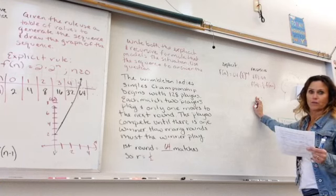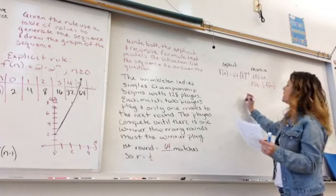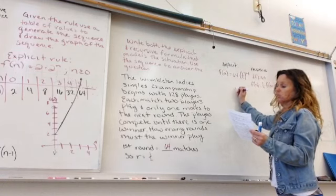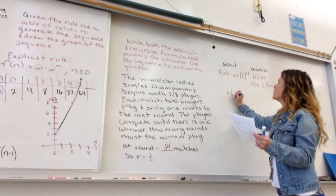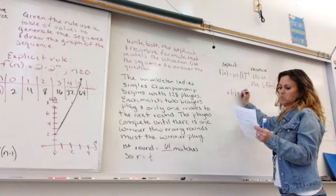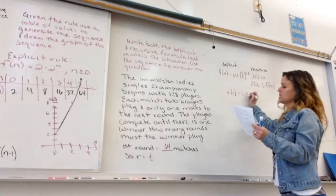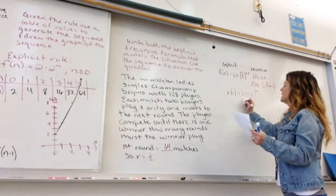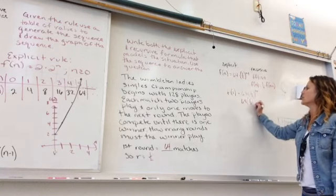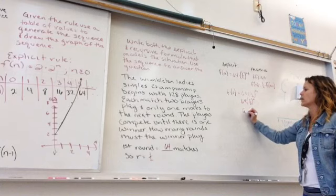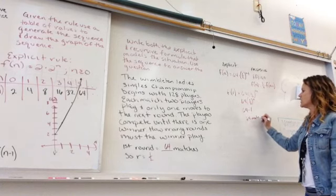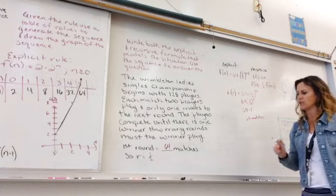I don't want to actually do all 64 matches out, so I want to find out how many matches the winner will have. So we want to know when f equals the winner, 64 times 1 half to the 1 minus 1, that's 64 times 1 half to the 0. Anything to the 0 power is 1. So this winner will have played all 64 matches.